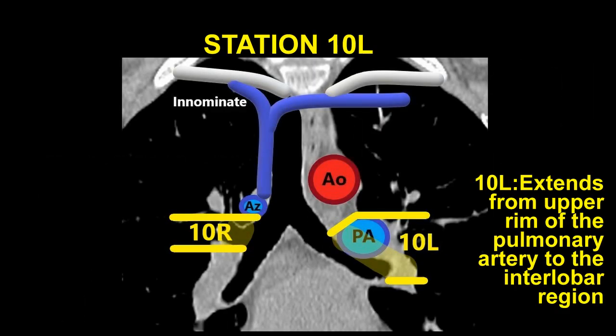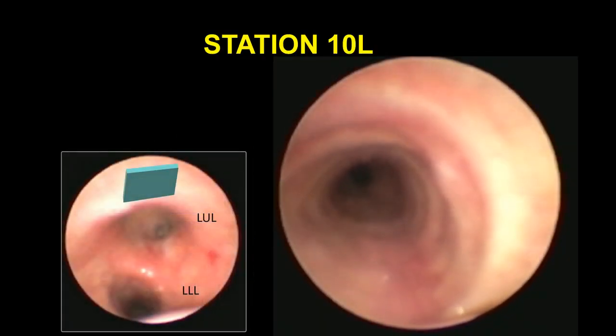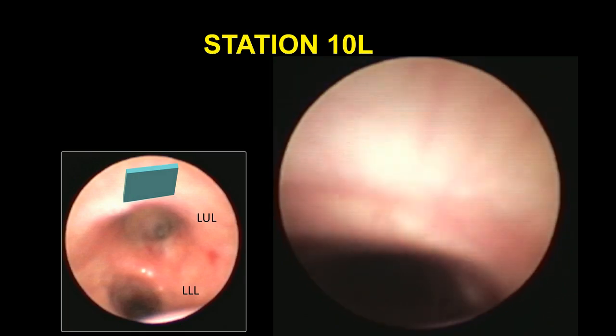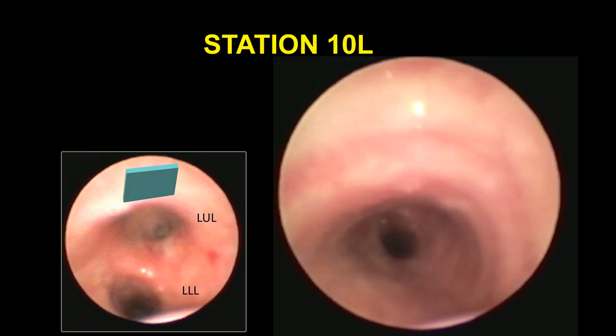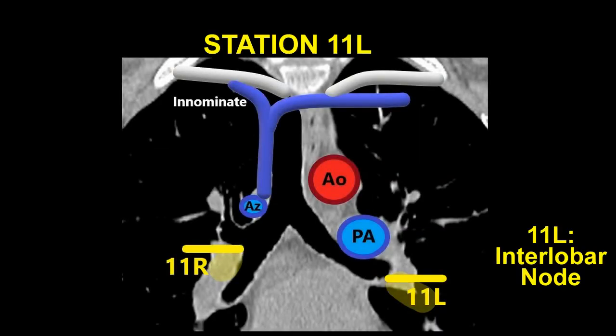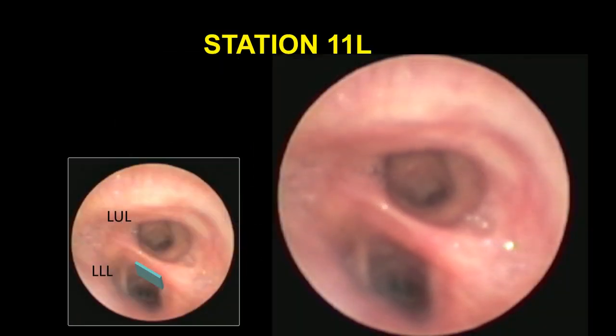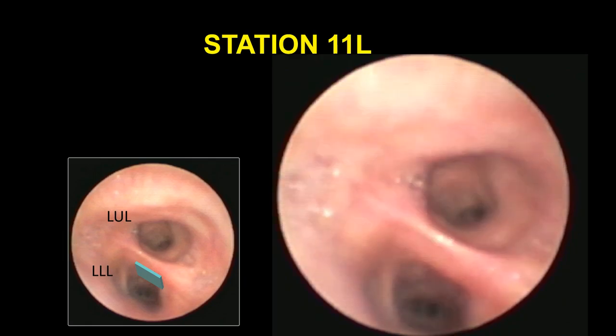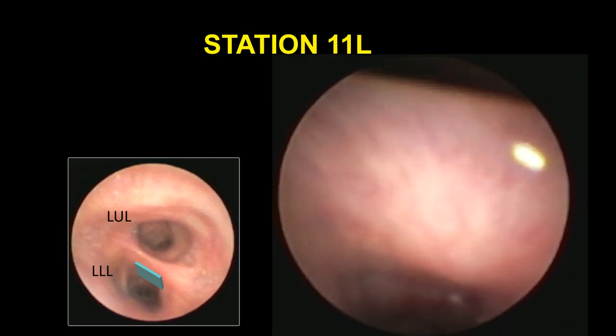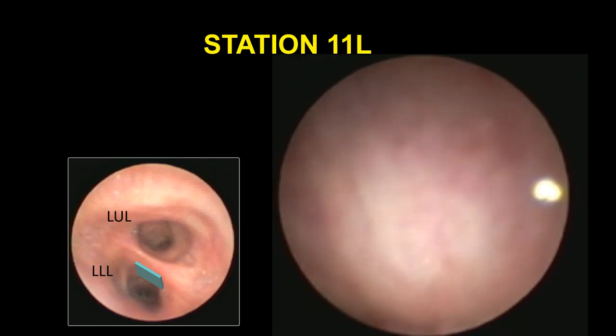Station 10L, the left hilar node, extends from the upper margin of the left pulmonary artery to the interlobar region between the left upper lobe and left lower lobe. To visualize Station 10L, the EBUS scope is advanced towards the proximal left upper lobe and oriented towards the 11 o'clock position. Station 11L is comprised of nodes located between the left upper lobe and lower lobe bronchi, and can be visualized by advancing the scope towards the proximal part of the left lower lobe bronchus with the probe oriented laterally towards the left.